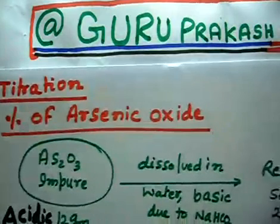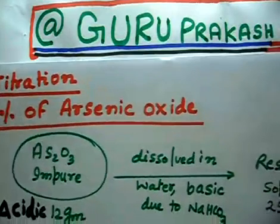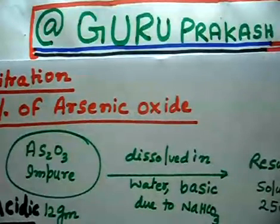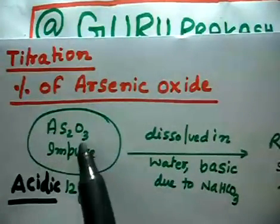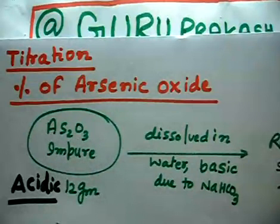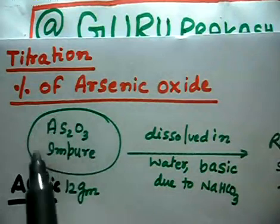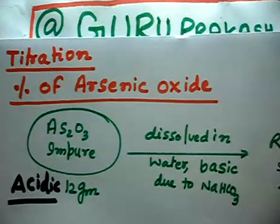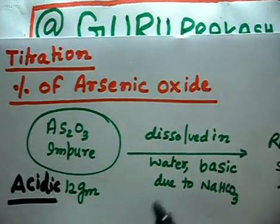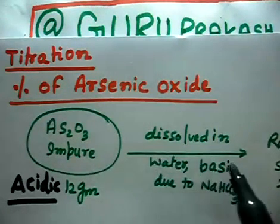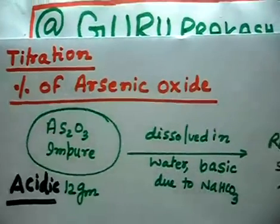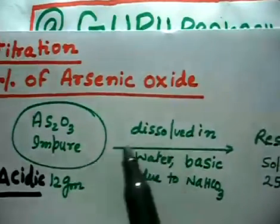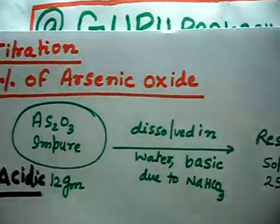This problem is related to percentage of arsenic oxide. We have a 12 gram sample of impure arsenic oxide, which is acidic in nature. Oxides of non-metals are acidic and oxides of metals are basic. This acidic oxide is dissolved in water containing sodium bicarbonate (NaHCO3), which is basic in nature. So we will have a simple acid-base reaction.